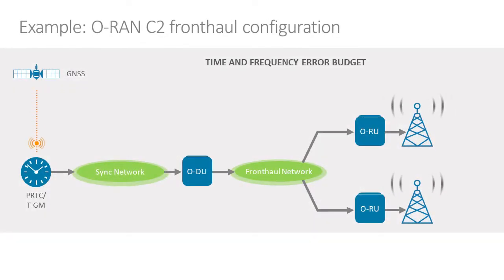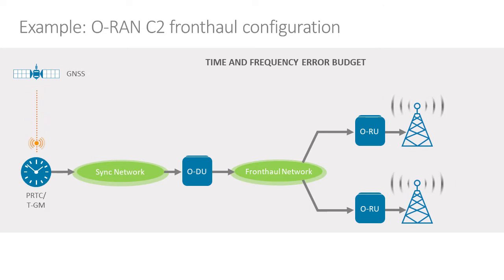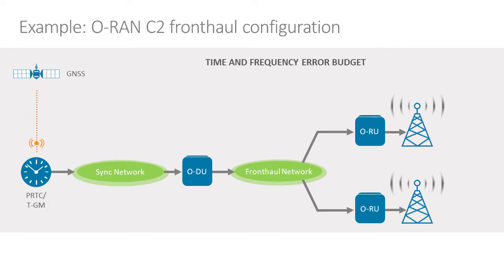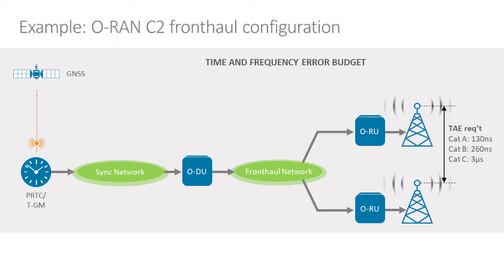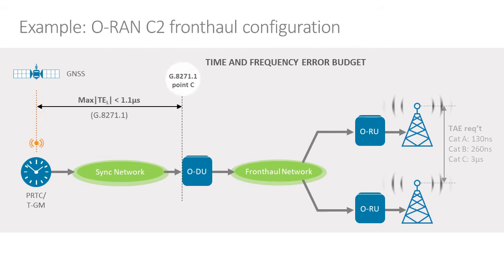I'd like to take a deeper look at that C2 configuration. It's going to give us a good example where we can look at the time and frequency budgets for the equipment, for network performance, how these all fit together, and what that means for testing a device. Ultimately, on the air interface, there is a relative time error requirement between these two points, all the way back into the network for the C2 configuration — remember there's synchronization delivered into the ODU.